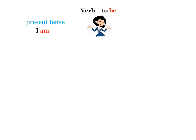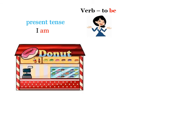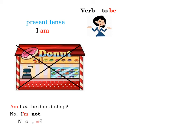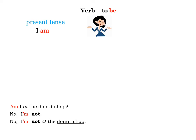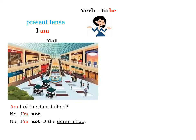I was at the beach. Present tense: I am. Am I at the donut shop? No, I'm not. No, I'm not at the donut shop.